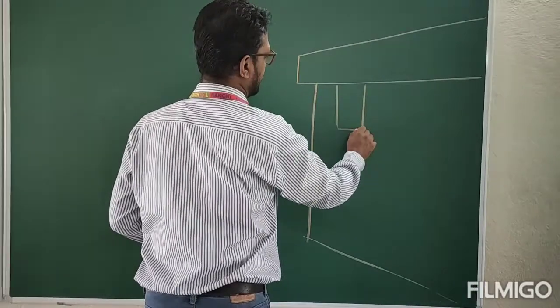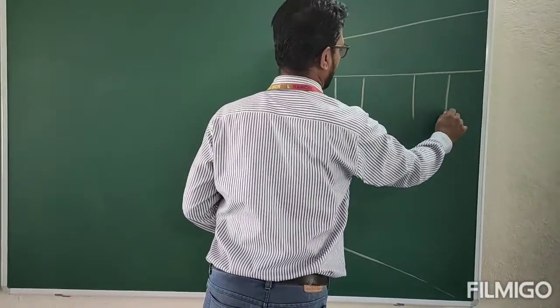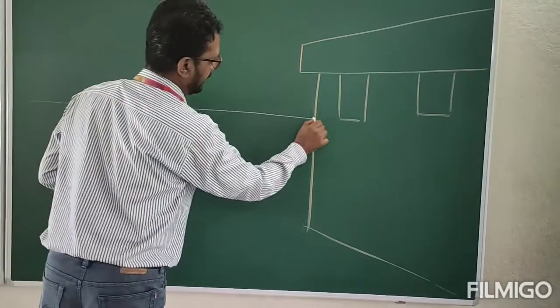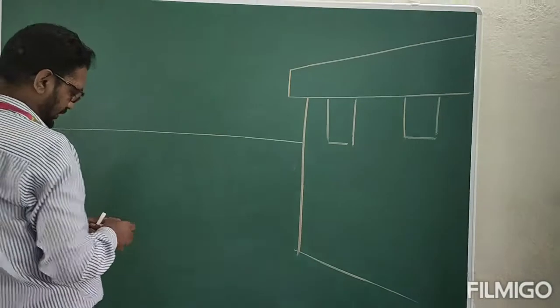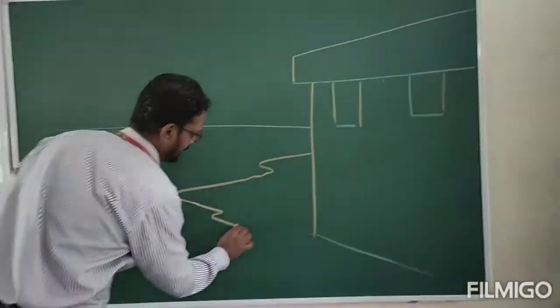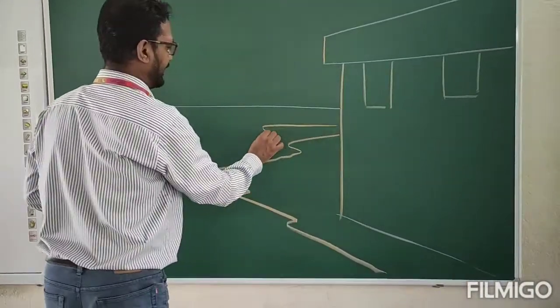Suppose a big house is there. This is the back side of the house. In between, there is a road. As you are using class, I am drawing the same.